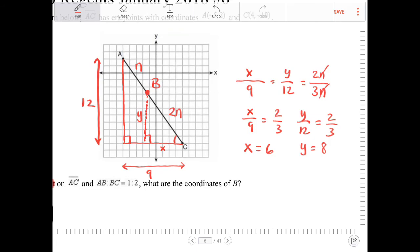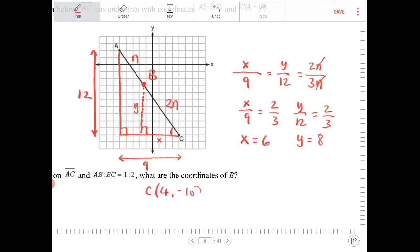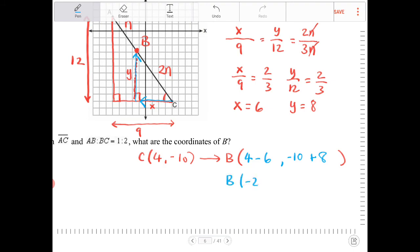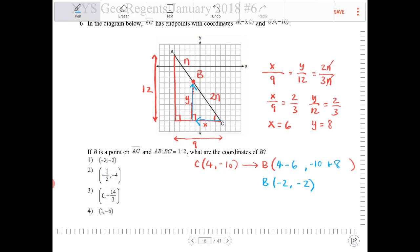So looking at the situation now, point C is located at 4, negative 10. So to get to point B, we're going to move 6 units to the left of C. So horizontally, we're going to move 6 units to the left. And then we're going to go up 8 units. So where will that land us? We're going to do 4 minus 6, and then we're going to do negative 10 plus 8. And that will land us with negative 2 comma negative 2.